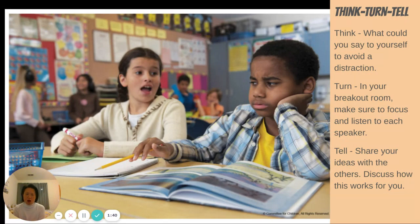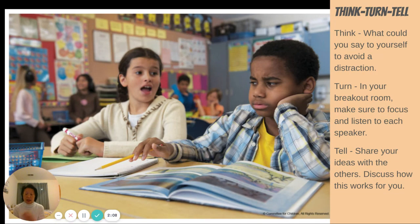First, let's think about this: what could you say to yourself to avoid a distraction? If you have another family member around, you could ask them what they do when they try to avoid distractions, or even other people in your class. Now, turn — that means make sure when you're talking to that person, you're looking at them and hopefully they're looking at you back too. Some of your classmates will be working on this in a breakout room, and they need to turn and focus on everybody in that breakout room at the same time. Only when they have turned are they all ready to tell. When you tell, you're supposed to share what your ideas are and other people will share their ideas with you. Hopefully you'll have a nice discussion on some tips about what to do when you're frustrated about being distracted.